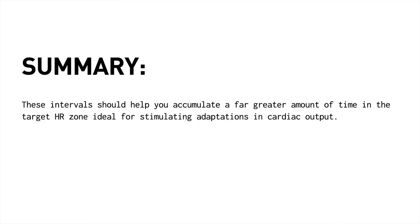In summary, compared to shorter intervals using a fixed power output associated with your VO2 max — such as those derived from training zones calculated from an FTP test — these variable power intervals may help you to accumulate a far greater amount of time in the target heart rate zone that's ideal for stimulating adaptations in cardiac output. Hopefully this short video has given you a few ideas and a new perspective on how to improve your aerobic capacity, which is one of the cornerstones of endurance performance. If you've got any questions, please leave them in the comments below and check the description box for some extra training resources from myself and Dr. Emma Wilkins. Good luck with your training and I'll catch you on another video soon.